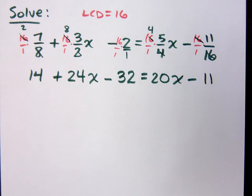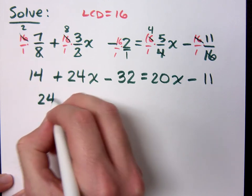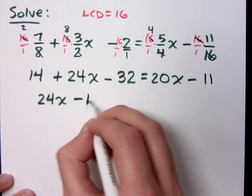Now, you may want to combine like terms before you finish this. So when I combine like terms, what do I have? Fourteen minus 32. All right, so 24x. Fourteen minus 32 is what? Eighteen. Negative 18. Negative 18.